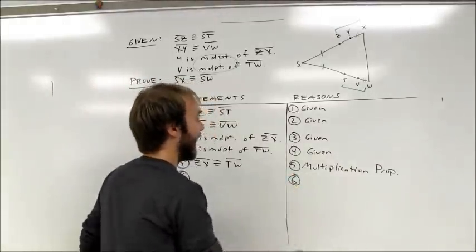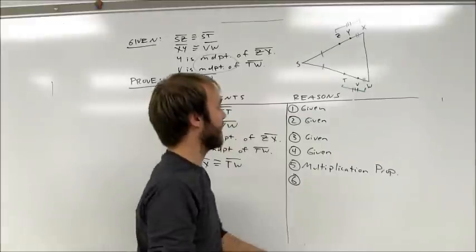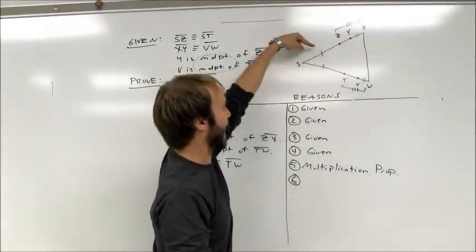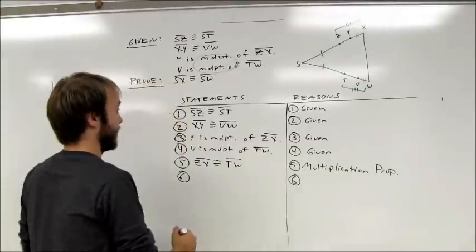Step six, and we're almost done. I've now shown that this segment is congruent to that segment. I have congruent segments, and I add two congruent segments. I get two whole congruent segments, and that's just the addition property.